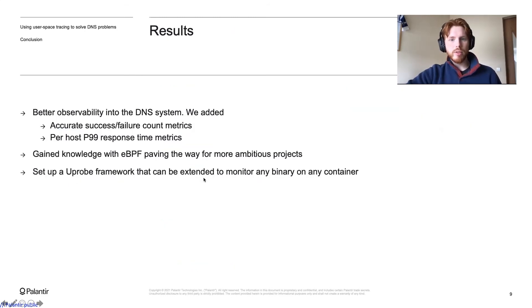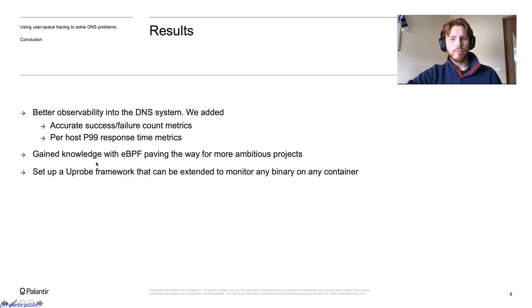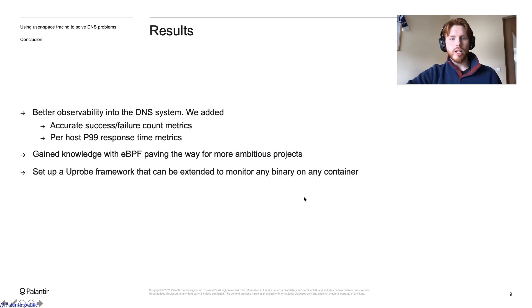Wrapping everything up, we massively improved our DNS observability. We added two metrics: an accurate success/failure count metric, which captures all the low-level failures we were missing, and a per-host P99 response time metric. We also gained team-level knowledge about BPF for future projects. Importantly, we now have a Uprobe framework which we can extend to monitor any binary on any container.